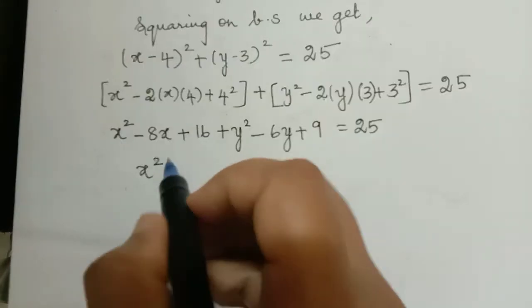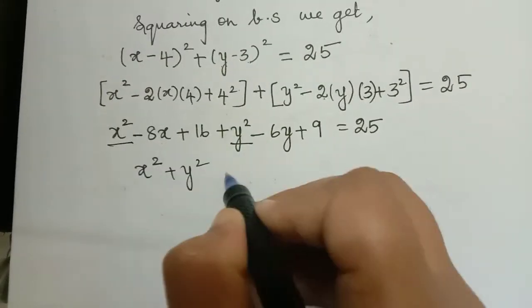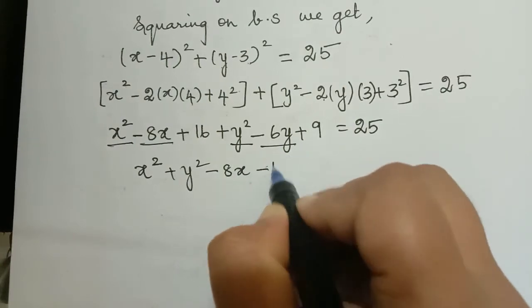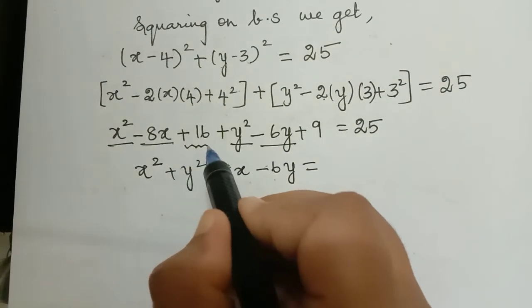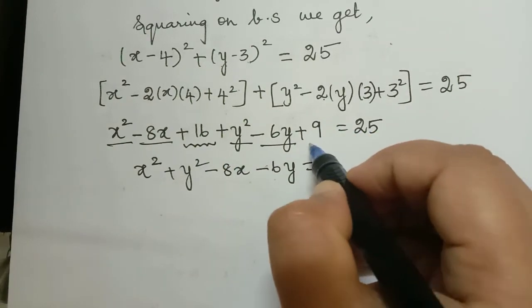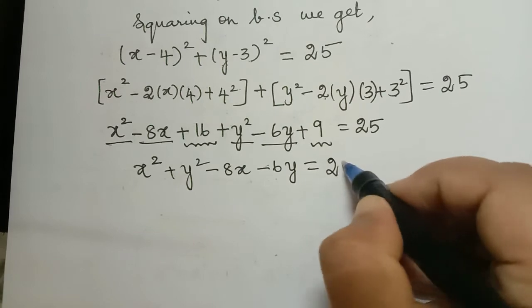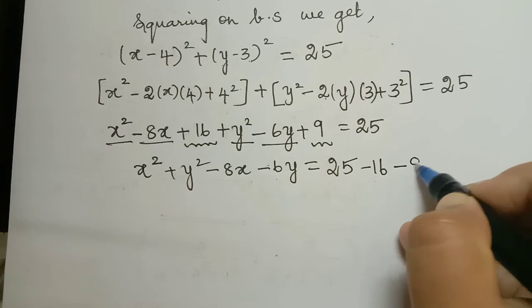So this gets simplified further: x squared plus y squared minus 8x and then minus 6y. And let me take all the constants to the other side. So 16 and 9 are the constants which can be taken to the other side, so this will be 25 minus 16 minus 9.